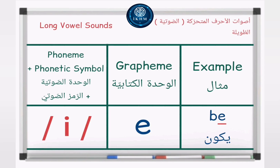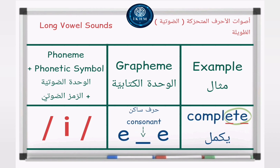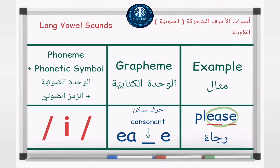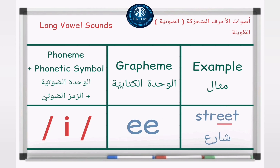Long vowel sounds. Phoneme plus phonetic symbol: /iː/. Grapheme — letter E, example: 'be' /iː/. Grapheme — E consonant E, example: 'complete' /iː/. Grapheme — letters EA, example: 'dream' /iː/. Grapheme — EA consonant E, example: 'please' /iː/.